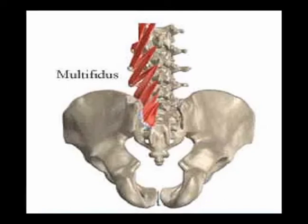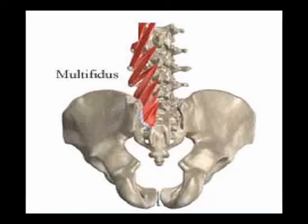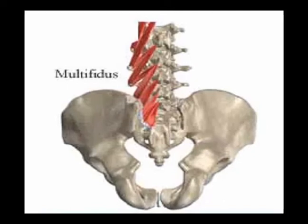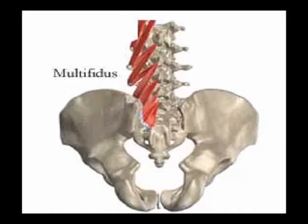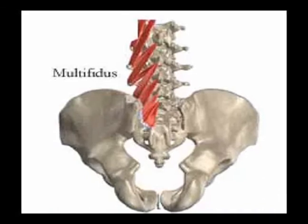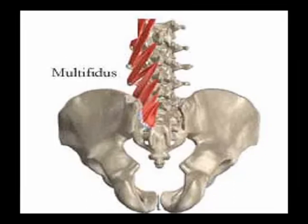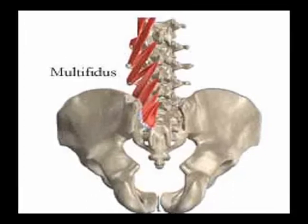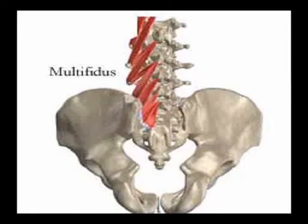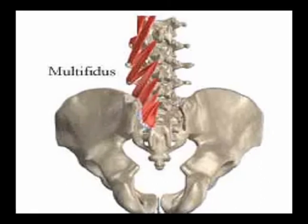The multifidi muscles function bilaterally to perform spinal extension. They function ipsilaterally to perform lateral flexion of the spine and contralateral rotation. They are also involved in proprioceptive feedback and input due to the high muscle spindle density.